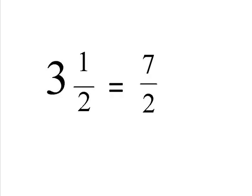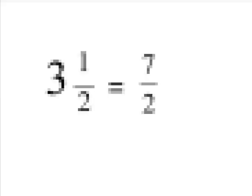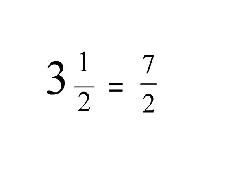So the first thing we do with the mixed number is we get the whole number, which is a 3, and we times it by the bottom number of the fraction, which is the 2. So 3 times 2 equals 6.